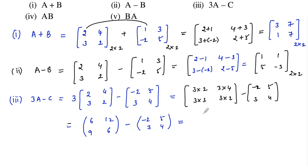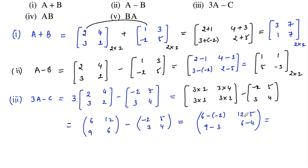Subtracting: 6 minus negative 2 is 8, 12 minus 5 is 7, 9 minus 3 is 6, and 6 minus 4 is 2. So 3A minus C is the 2 by 2 matrix 8 7 6 2.